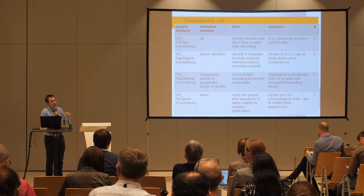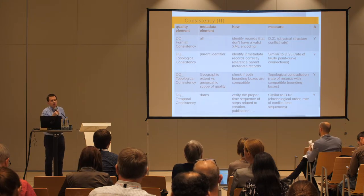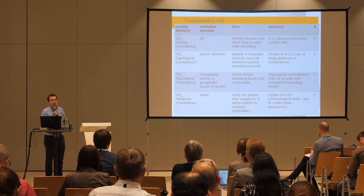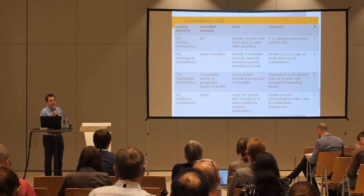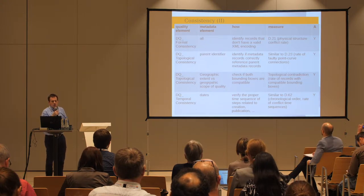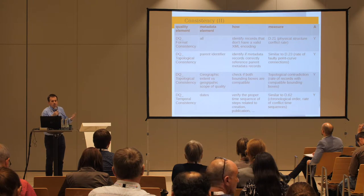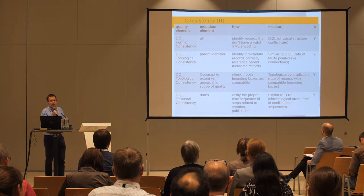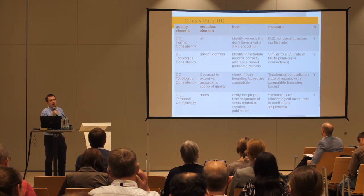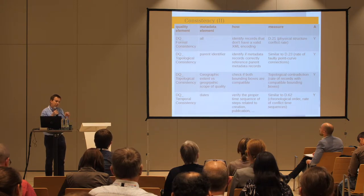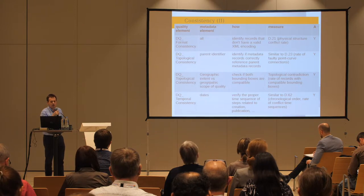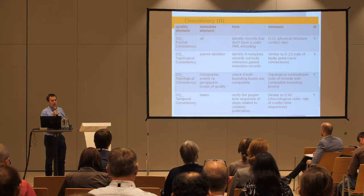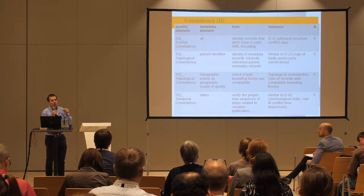With respect to consistency, we also check general format consistency — whether metadata records use XML encoding, which is the typical format to serialize metadata. Something new is topological consistency. Trying to find a parallel in metadata, we analyze the relationships between a metadata record and other metadata records in the collection. For example, we check whether references to parent identifiers — other metadata records describing a parent dataset — are correct.